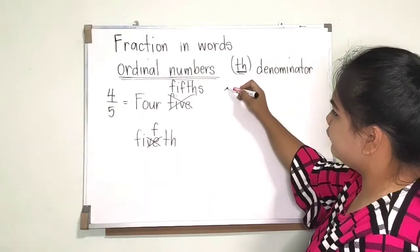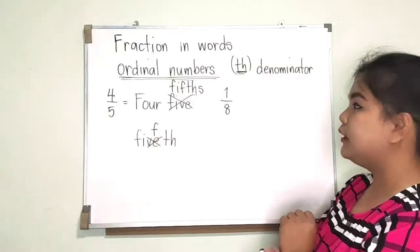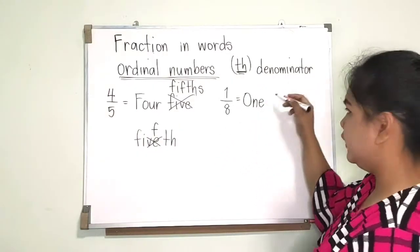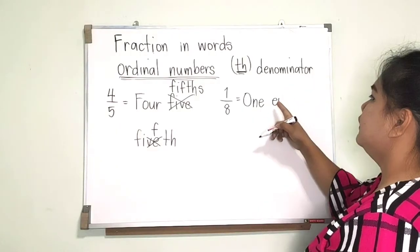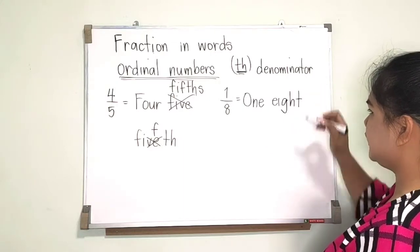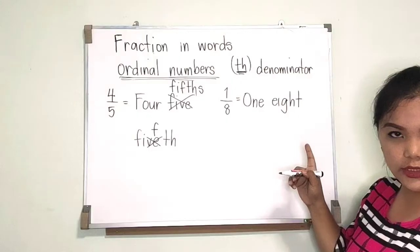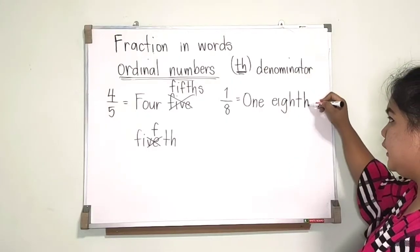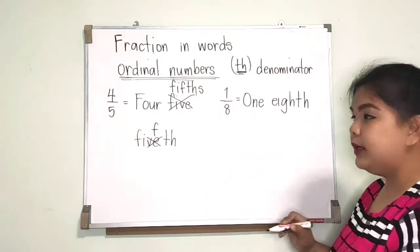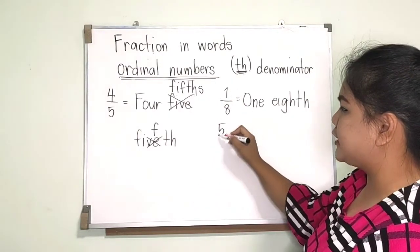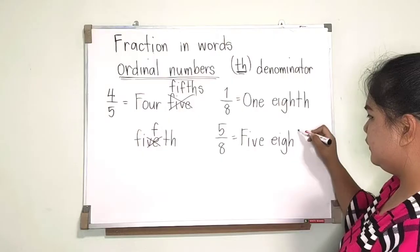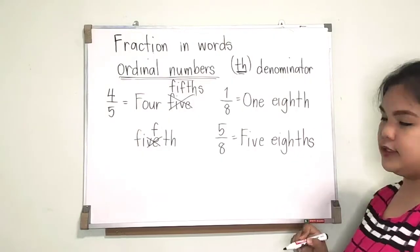What if we have 1/8? Eight is spelled E-I-G-H-T. Since 'eight' already ends in T, you are going to add only H — so it becomes 'eighth,' without S because the numerator is equal to one. But if it is more than one, for example 5/8, it will be 'five eighths' with S.